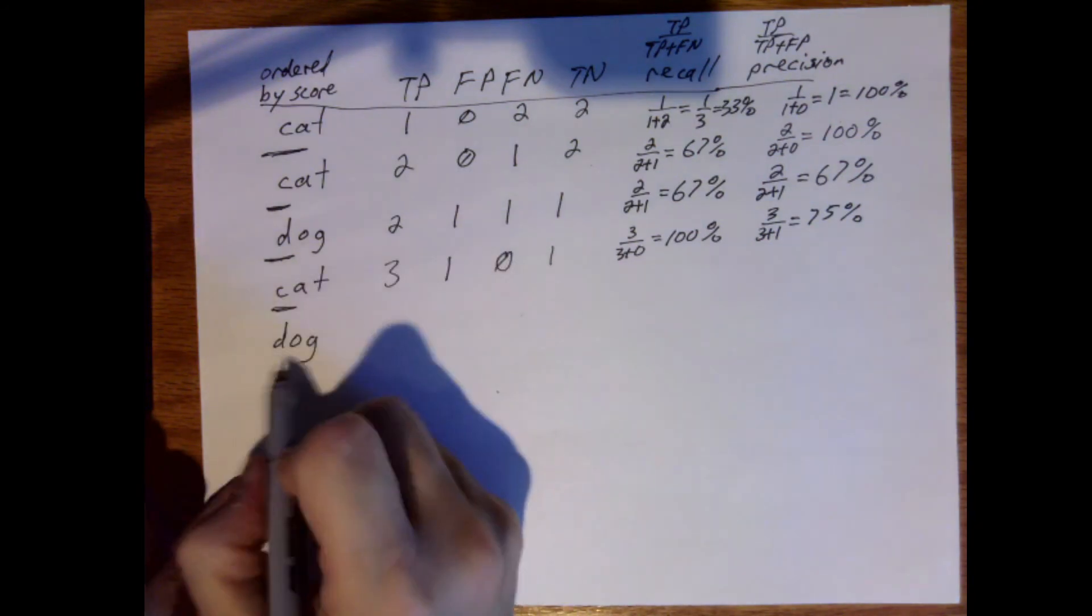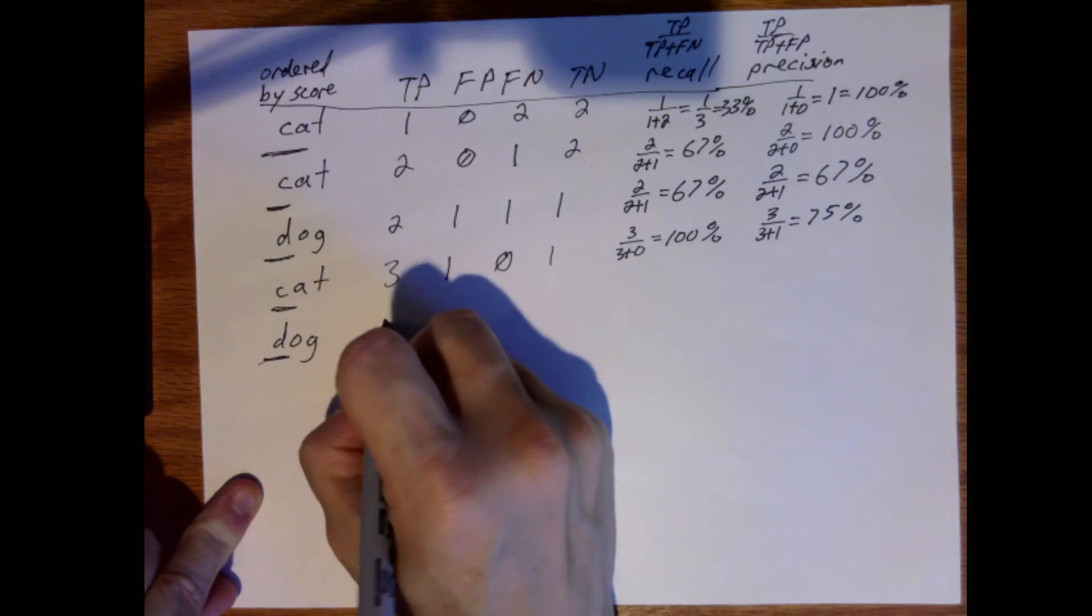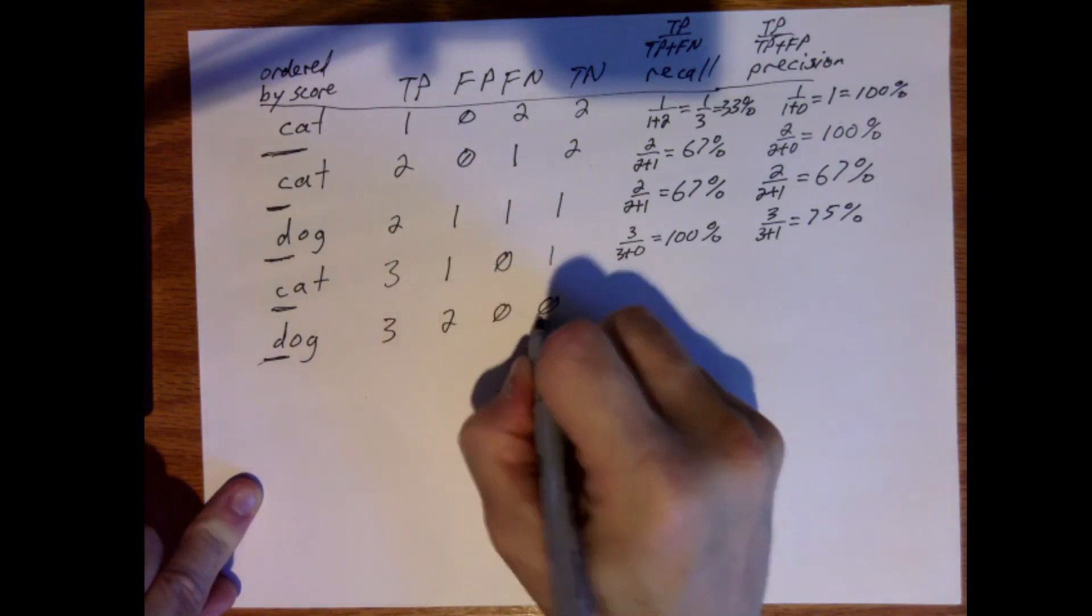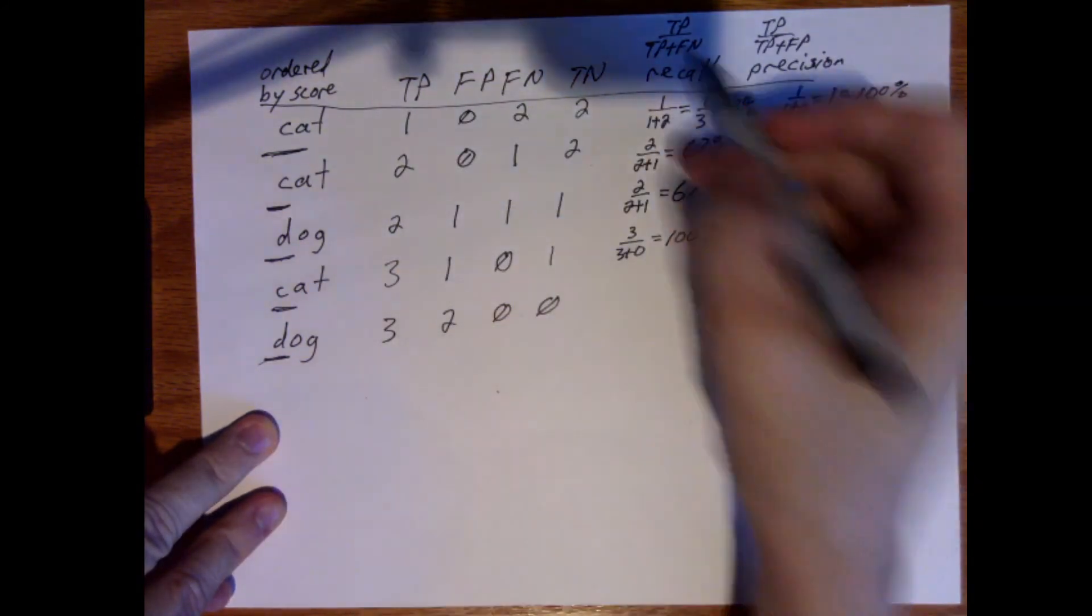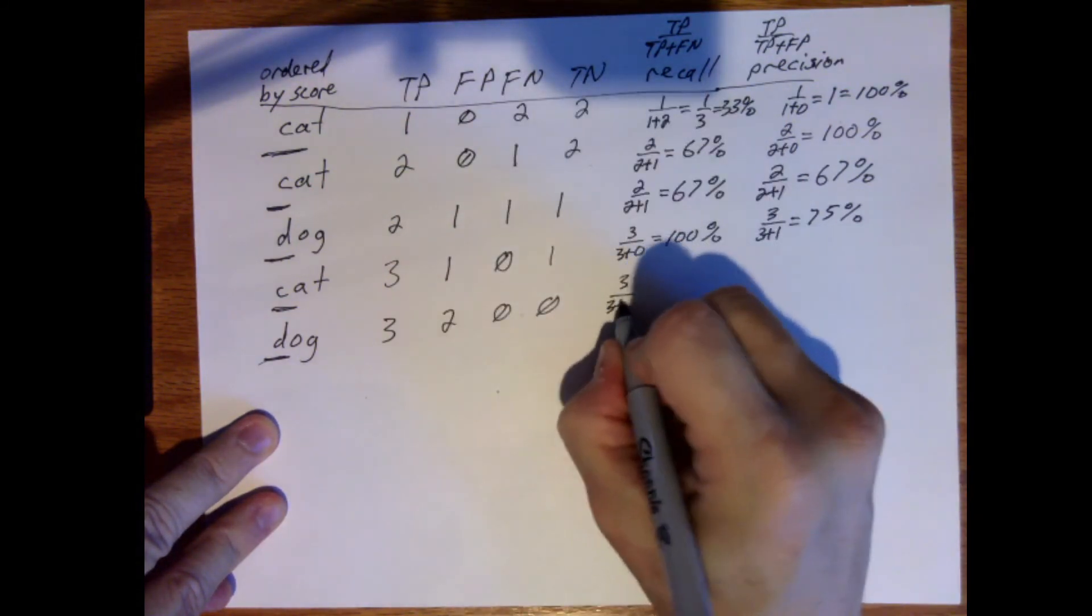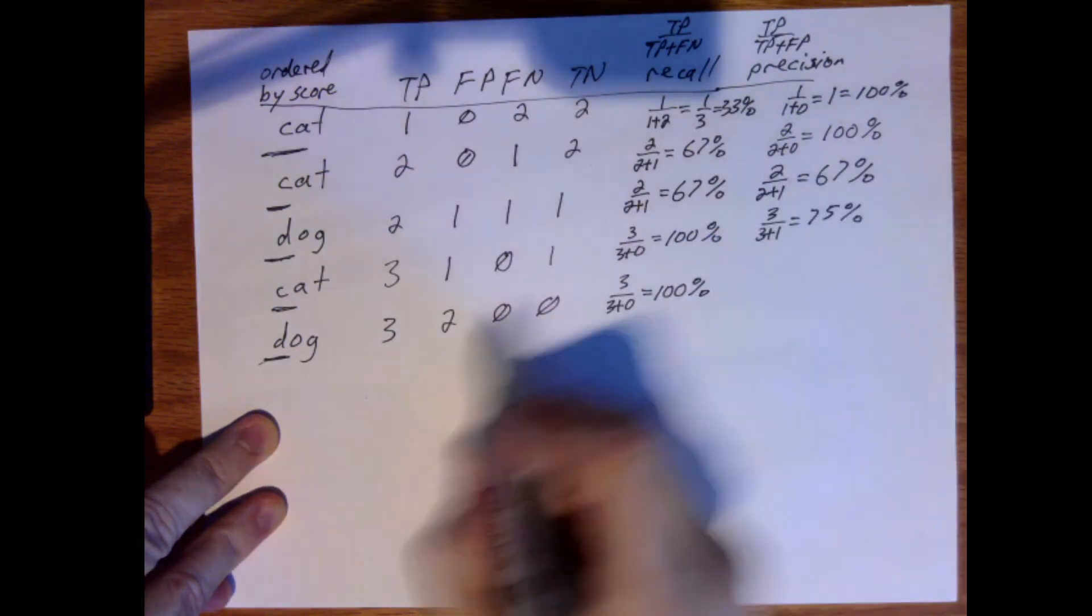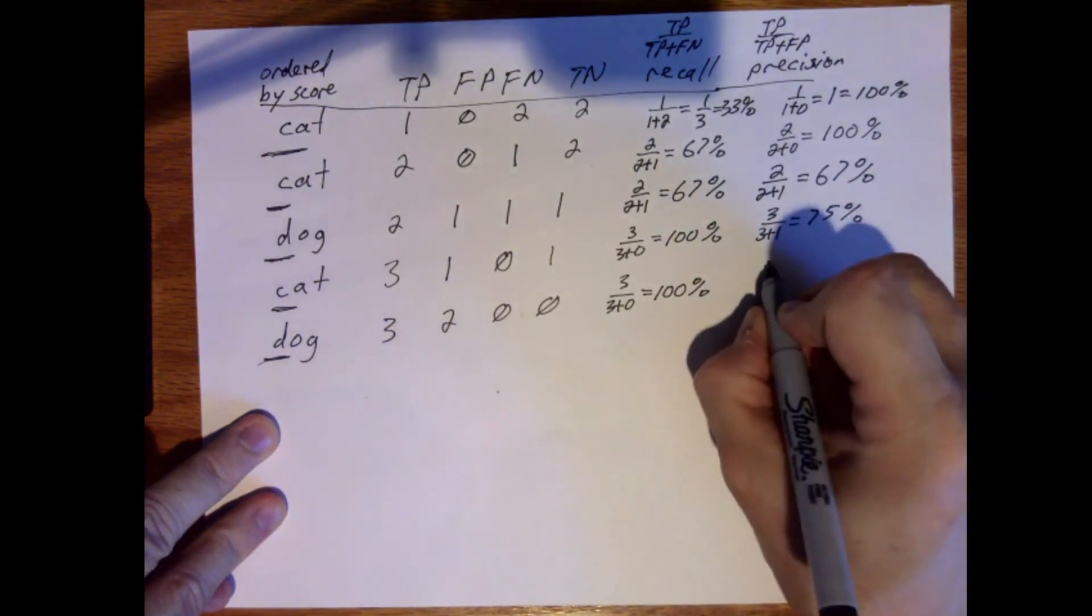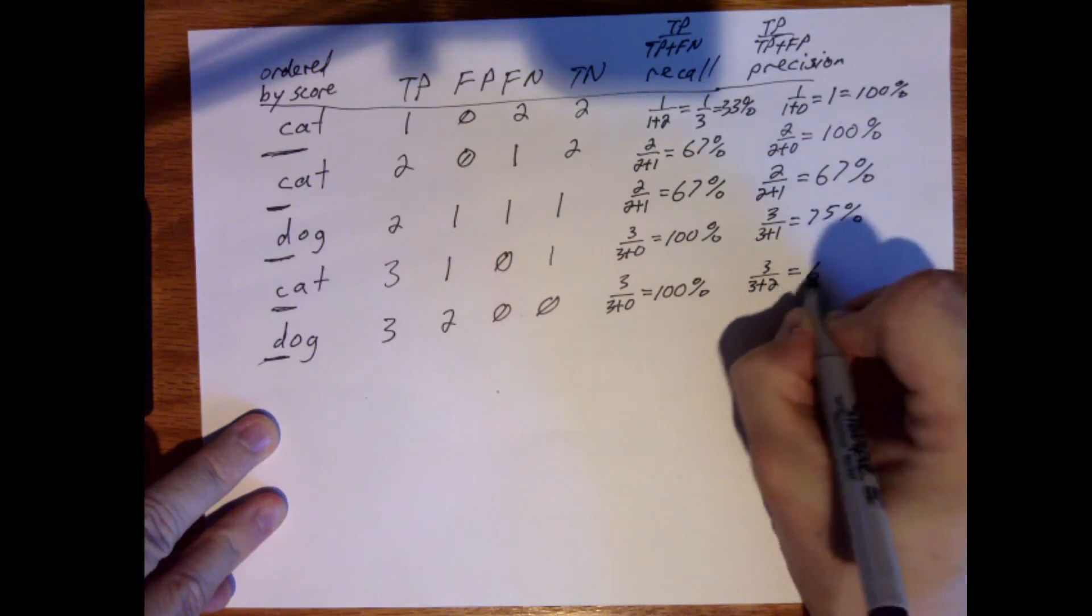And then finally we lower the threshold such that every image is returned. So we get three here, two here, zero and zero. Because they all have to sum to five. Everything has to be in one of the four possibilities here. So true positive is three. Three plus zero equals 100%. And then here we get of the five things that were returned, how many really were cats. So that's three fifths, which is 60%.